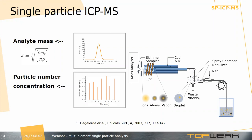What kind of information can we get from such signals? From the signal intensity we can deduce information about analyte mass in the particle. It's important to emphasize that ICP-MS measures mass and not size, but the size can be estimated if you know or assume particle density, particle shape, and composition. By simply counting these single spike events, we can also determine the particle number concentration.